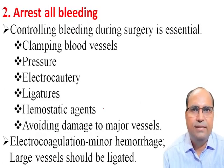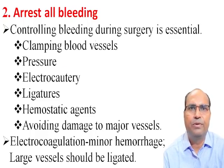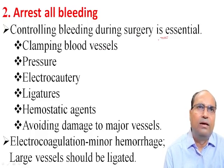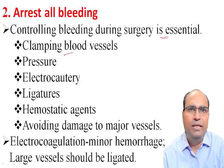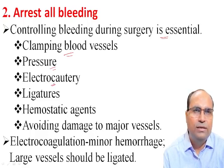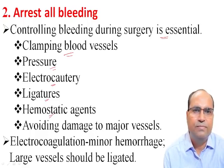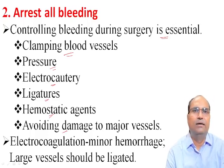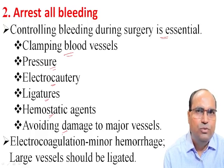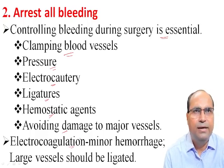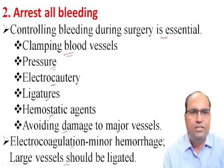The second principle of Halstead is to arrest all bleeding. Controlling bleeding during surgery is very essential. Bleeding can be controlled by clamping the blood vessels, applying pressure on the blood vessels, using electrocautery, ligating the blood vessels, or using hemostatic agents. Avoid damage to the major blood vessels. Electrocoagulation is useful for minor hemorrhage, while large vessels should be ligated.